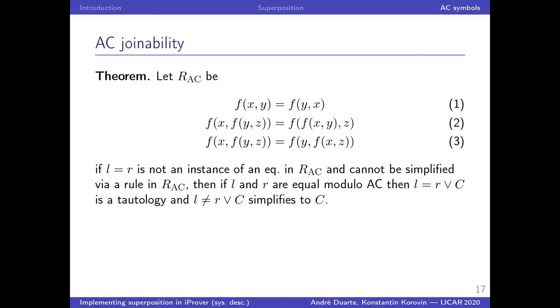Then if that happens, we can simplify clauses containing L equals R or L not equals R. These tests are very cheap to apply in practice, checking if two terms are equal modulo AC. And this enables us to delete many redundant clauses, as well as avoid generating inferences between the axioms themselves, which is also very important. Because without this criterion, we would make inferences between the axioms and this will lead to combinatorial explosion.